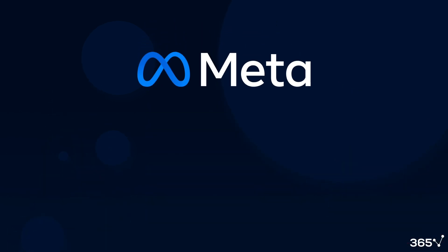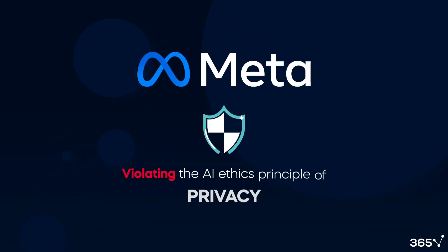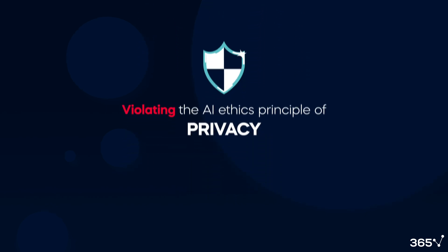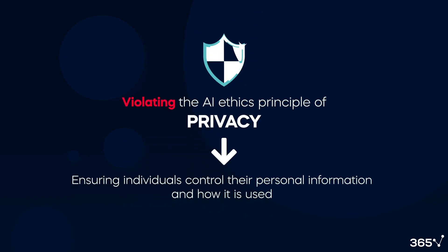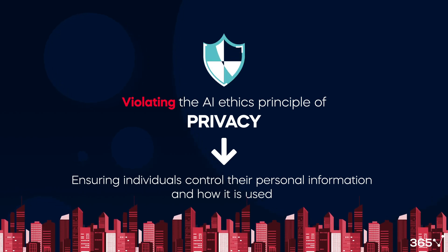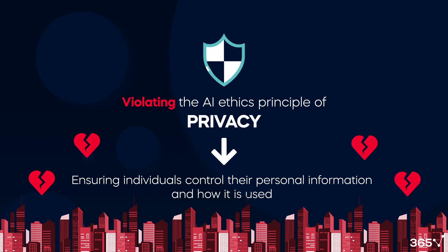The Meta case is a clear example of violating the AI ethics principle of privacy. Privacy is about ensuring individuals control their personal information and how it is used. Companies using data without explicit consent risk compromising people's trust and well-being.